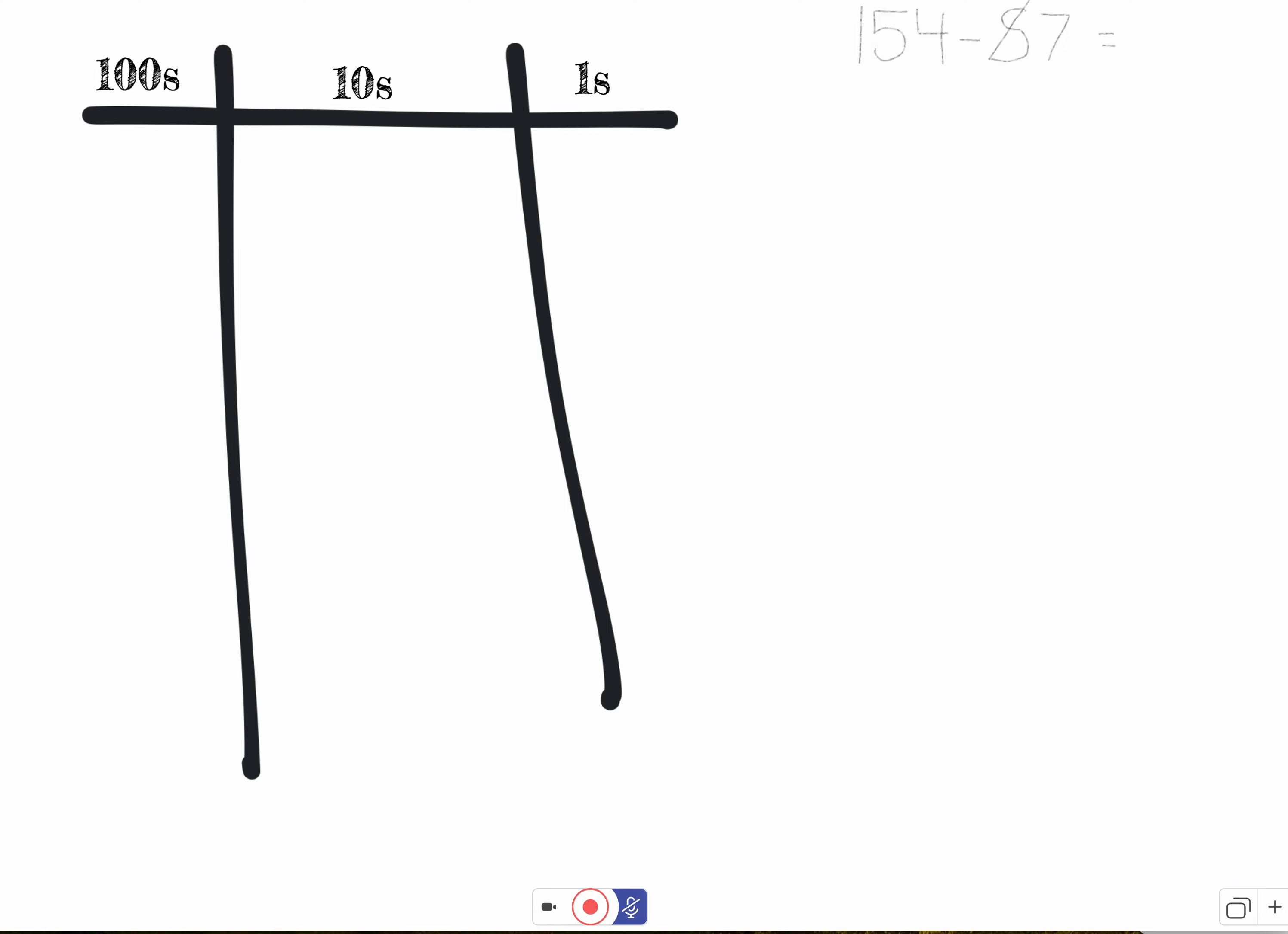So we have the problem 154 minus 87. What are we going to draw first? Well, we're going to draw 154 on our place value chart because that is the total.